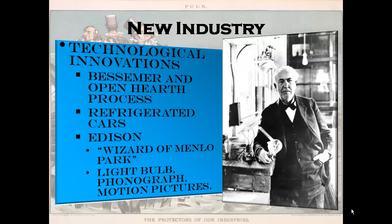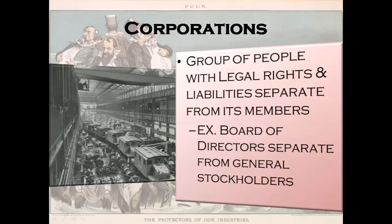Cities grew upward and outward. We talked about the refrigerated rail car and how this allowed Gustavus Swift to vertically integrate his meatpacking industry. All of these innovations are going to play a role in the industrial development of the United States after the Civil War.